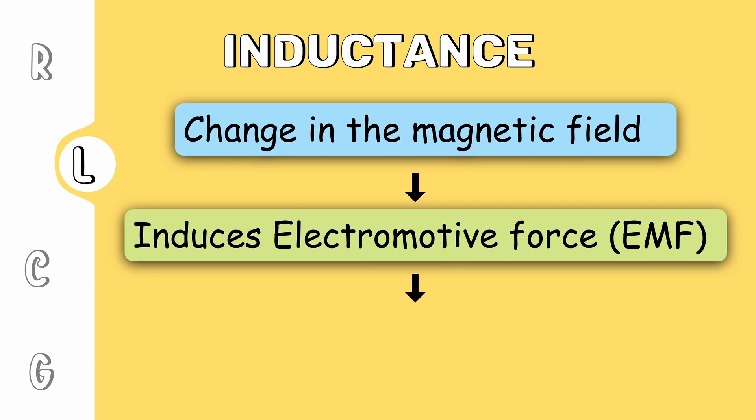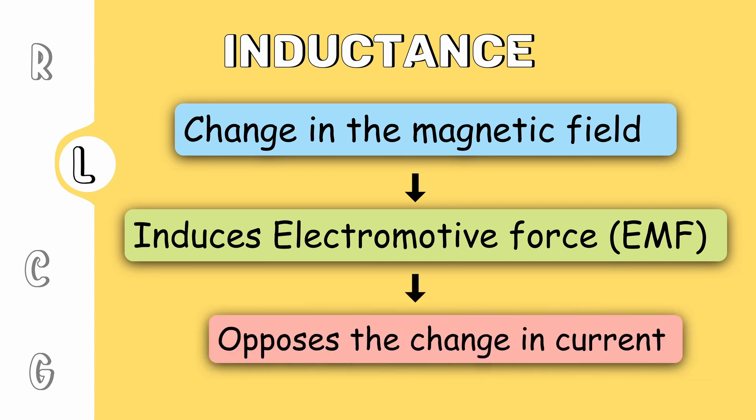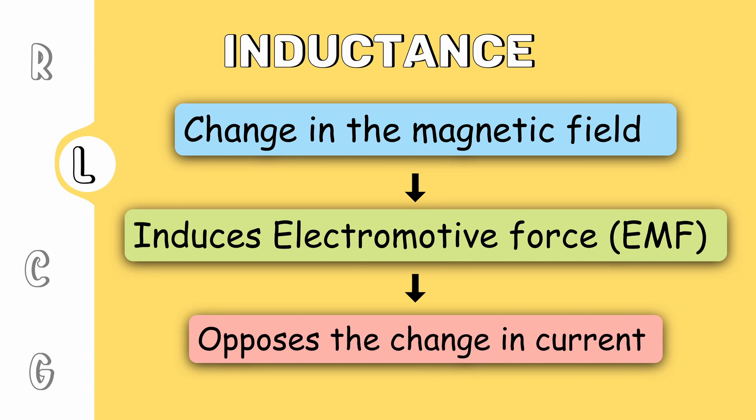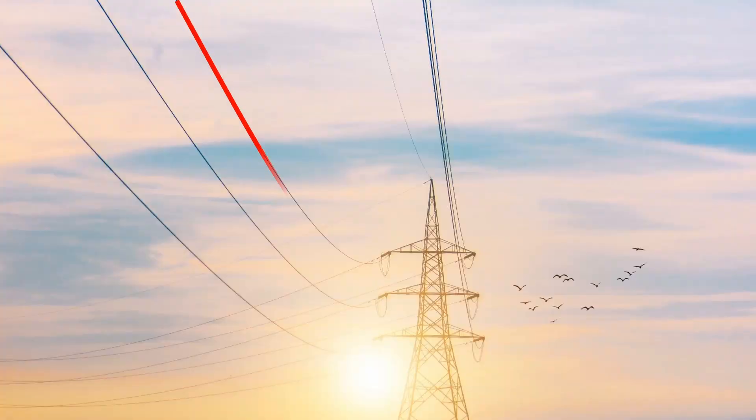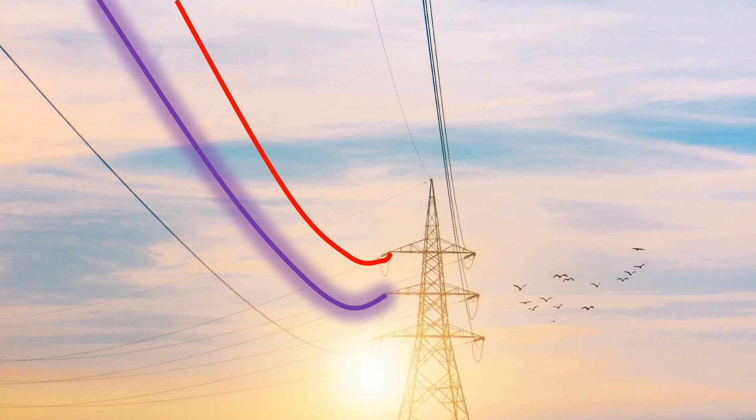This induced voltage has the effect of opposing the change in current. This tendency of an electrical conductor to oppose a change in electric current flowing through it is called inductance. The interesting fact here is, the current flowing in one conductor can induce a voltage in the neighboring conductor.